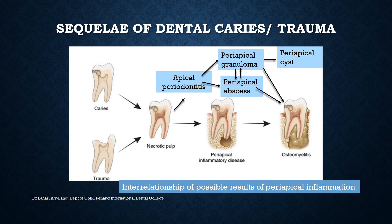When we're talking about inflammatory lesions, primarily all of them are sequelae of dental caries or trauma to the tooth structure. This is a diagrammatic representation of the interrelationship of possible results of periapical inflammation. The etiology of pulpitis of a tooth can either be caries or trauma, apart from other reasons that can inflame the pulp. These are the primary two important reasons where you can have a necrotic pulp, which then leads to apical periodontitis and further to periapical inflammatory disease.